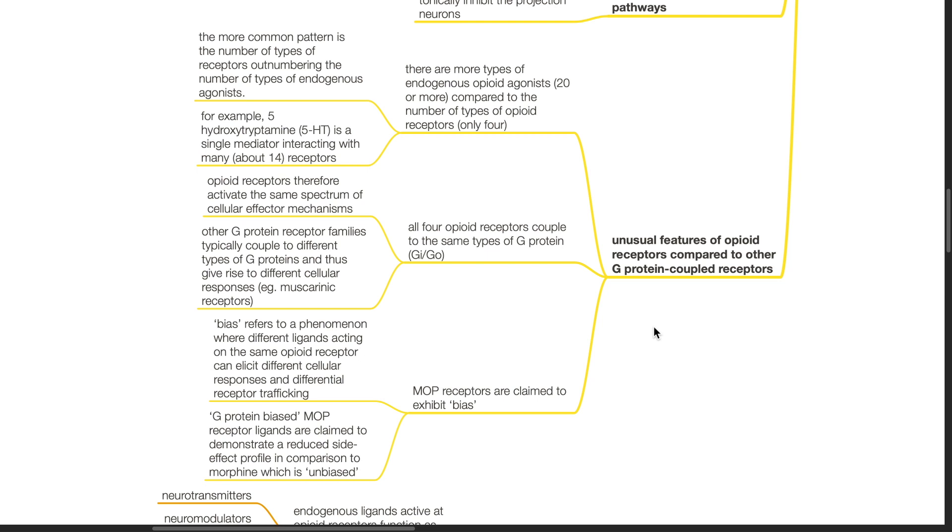Another unusual feature is all four opioid receptors couple to the same type of G-protein. Opioid receptors therefore activate the same spectrum of cellular effector mechanisms. Other G-protein receptor families typically couple to different types of G-proteins and thus give rise to different cellular responses. For example, muscarinic receptors.